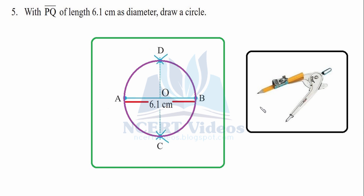Put the needle at B, open slightly greater than half of AB, and mark arcs at D and C. Then put the needle at A and cut at D and C. The intersection points allow us to draw a perpendicular bisector to find center O. Now draw a circle through the endpoints — this is how you construct a circle when the diameter is given, using compasses.